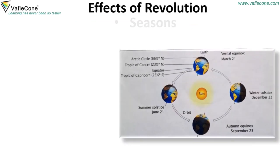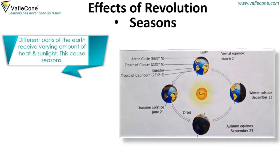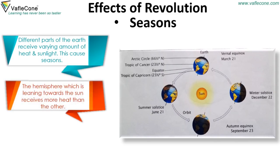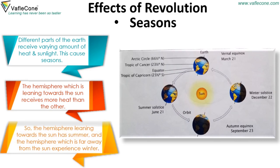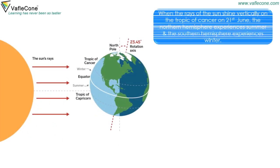Effects of Revolution: Seasons. Different parts of the Earth receive varying amounts of heat and sunlight, and this causes seasons. The hemisphere which is leaning towards the sun receives more heat than the other, so the hemisphere leaning towards the sun has summer, while the hemisphere far away from the sun experiences winter.